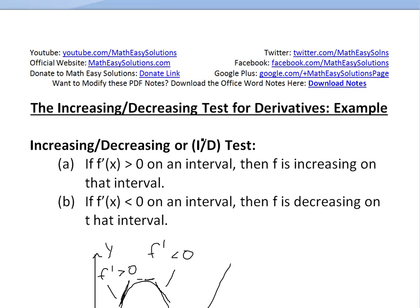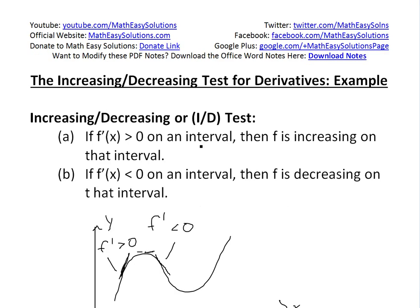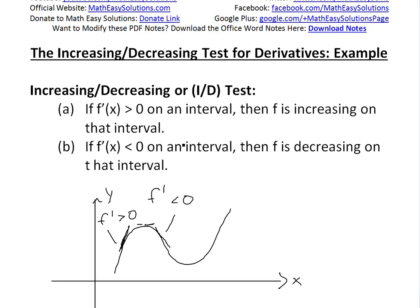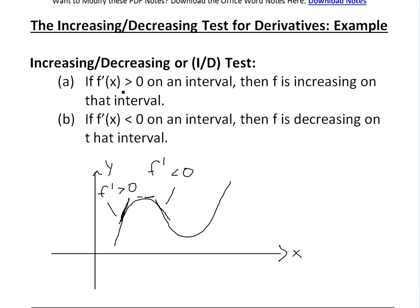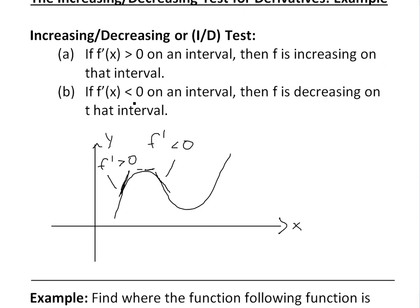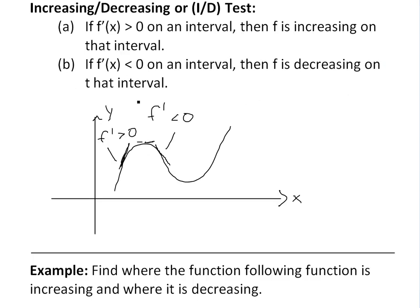Let's look at the increasing and decreasing test for derivatives and work through an example to illustrate my earlier video. Basically, I'll recap on the increasing and decreasing test. It states: if the derivative is greater than zero on an interval, then f is increasing on that interval. But if f prime of x, the derivative, is less than zero on an interval, then that function is decreasing on that interval.